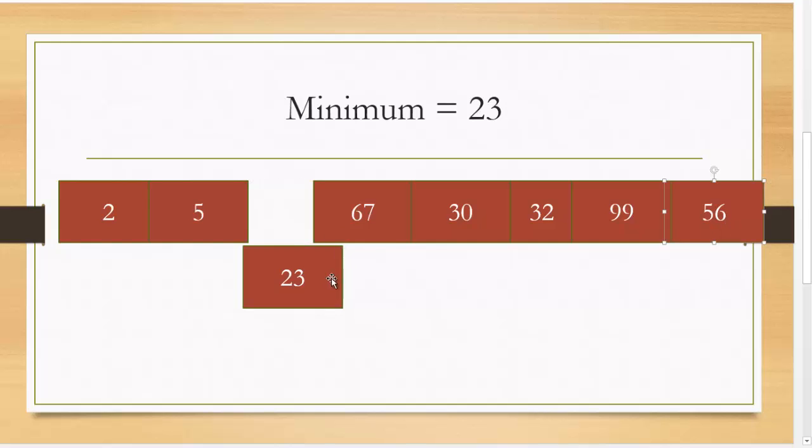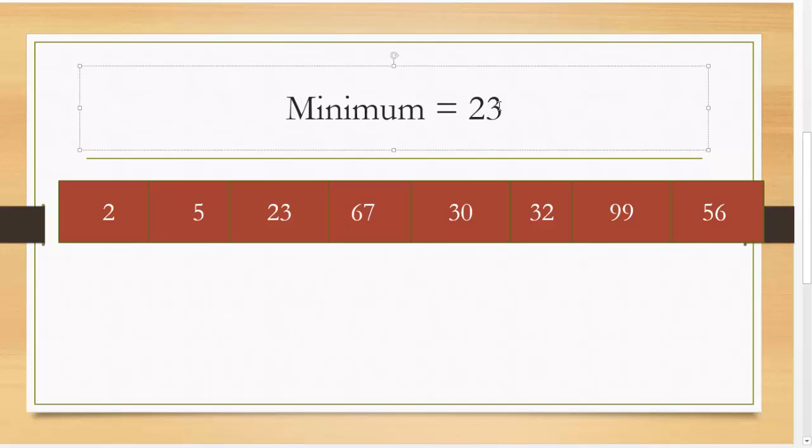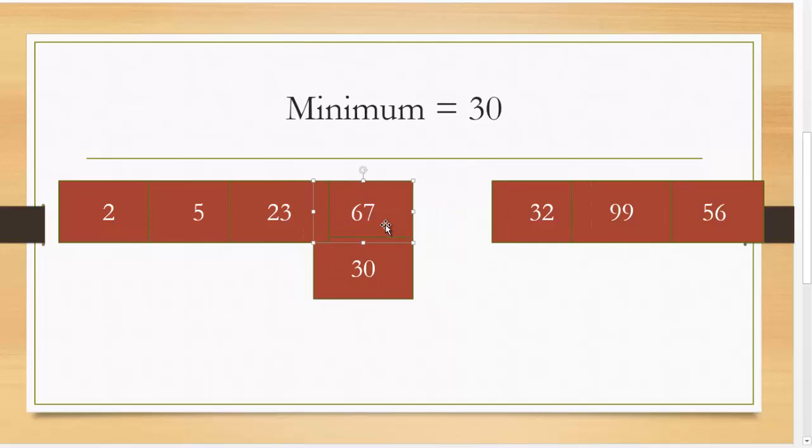You can now see where I'm going with this and you probably can solve the algorithm yourself. But I will keep on going until we are done. Now we're at 67 and we can set the minimum value to 67. Is 67 smaller than 30? No it's not. So I'm going to make 30 the minimum value. Is 32 smaller than 30? No it's not. Is 99 smaller than 30? No. Is 56 smaller than 30? No. So 30 is the value I'm going to swap with 67.